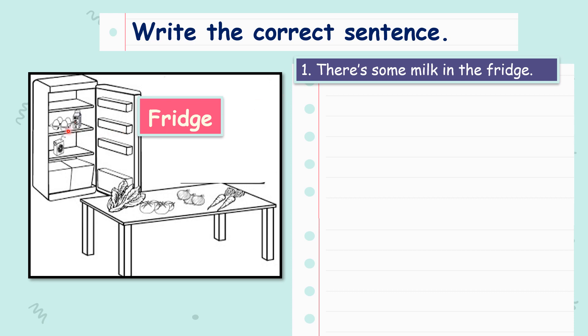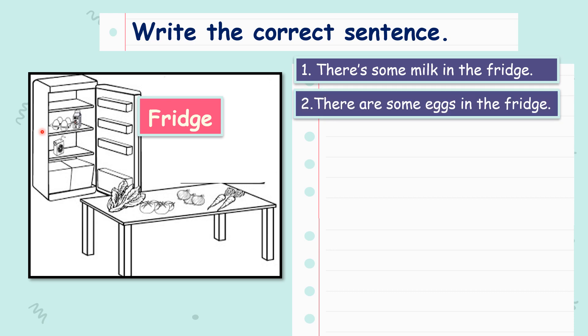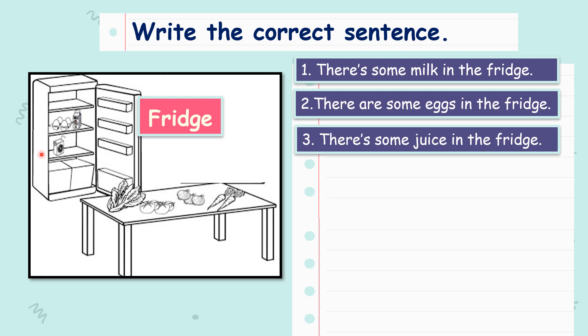Milk. What about this? We can count, we can touch, it's plural. So there are some eggs in the fridge. What about this? There is some juice in the fridge. Very good.